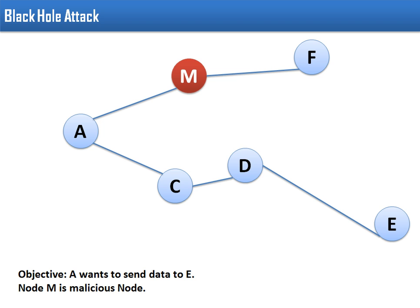So here we are having node A, C, B, E, F, and node M. This node M is representing a malicious node. The objective is that node A wants to send data to node E. So A is not having any idea about how to send a data packet to E, where this node E exists in the network.